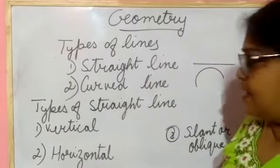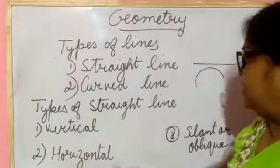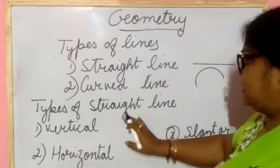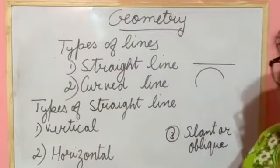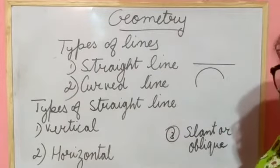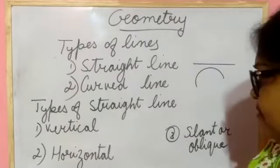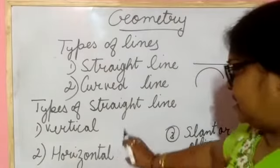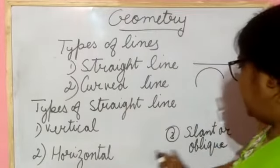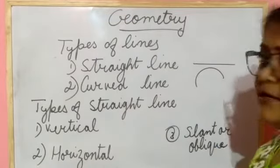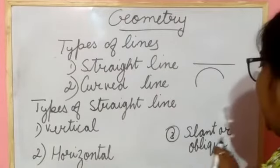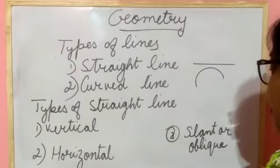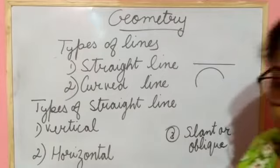A curved line means it is like this — a curved line. Now, types of straight line: a straight line can be a vertical line, a horizontal line, or a slant or oblique line.